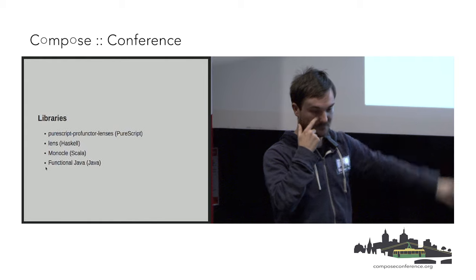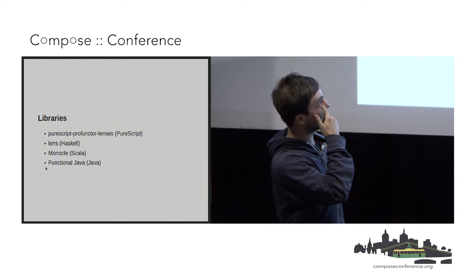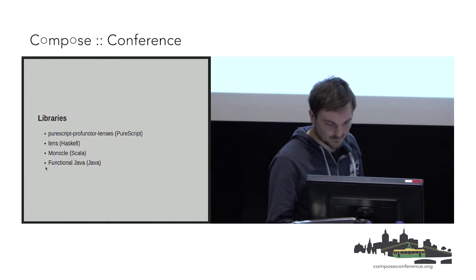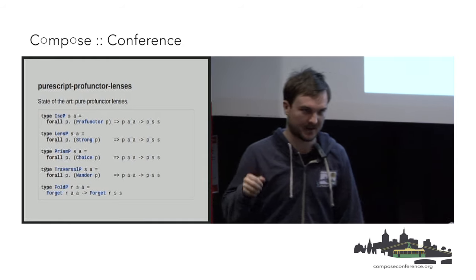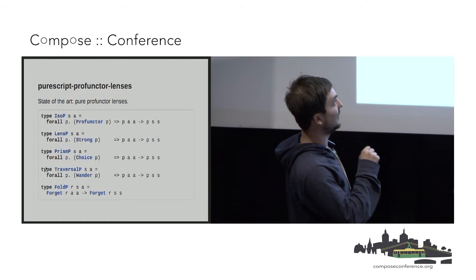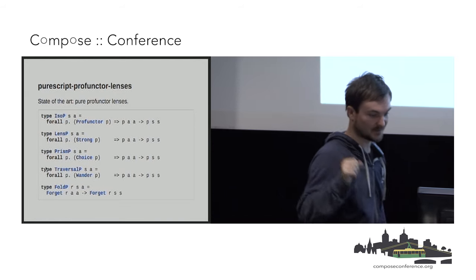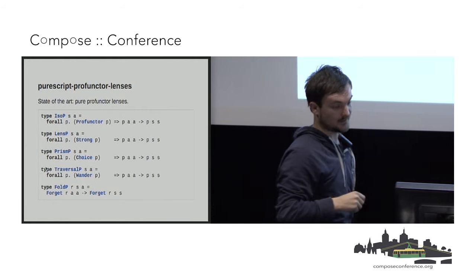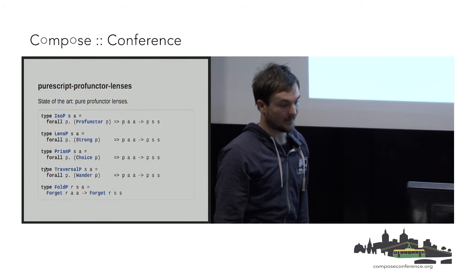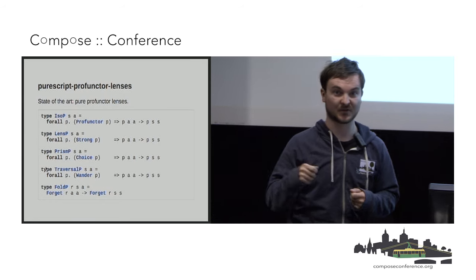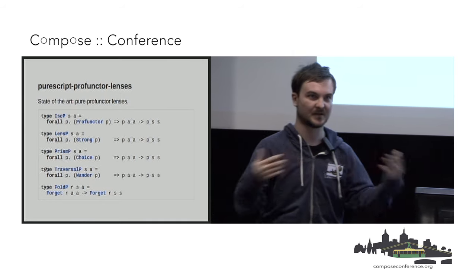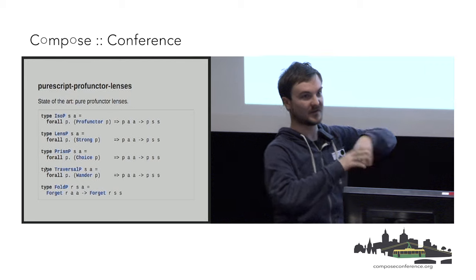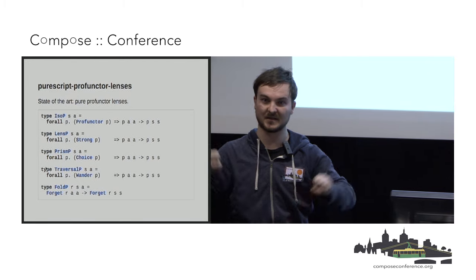These are libraries I've used in production. I've written and used optics in each of these libraries. I like to call this the state of the art. There are some drawbacks to this encoding of optics, but going from George's talk, you can see we've got a profunctor. By changing the profunctor constraint — changing it to either a Strong or a Choice, which are just special types of profunctors — we get to different types of lenses.